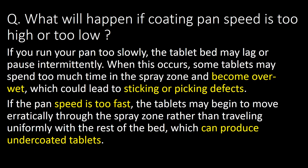What will happen if coating pan speed is too high or too low? If you run your coating pan too slowly, the tablet bed may lag or pause intermittently. Some tablets may spend too much time in the spray zone and become overweight, which could lead to sticking or picking defects. If the coating pan speed is too fast, tablets may move erratically in the spray zone rather than traveling uniformly, which can produce undercoated tablets.